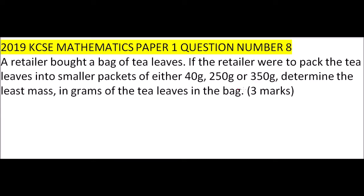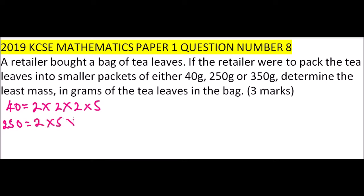To get the LCM, you need to write these numbers in their prime factors. Starting with 40: this is 2 × 2 × 2 × 5. Then 250: this equals 2 × 5 × 5 × 5. And 350 equals 2 × 5 × 5 × 7. These are the prime factors of the three numbers.